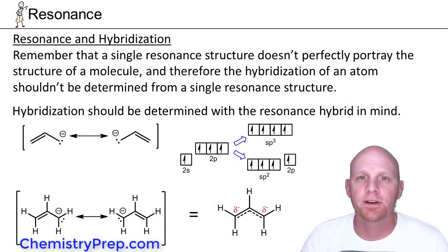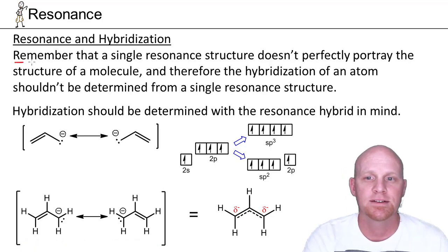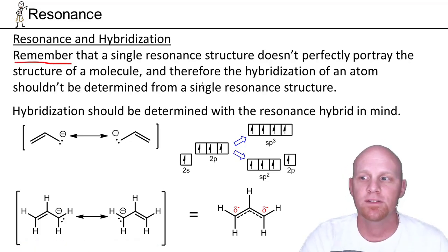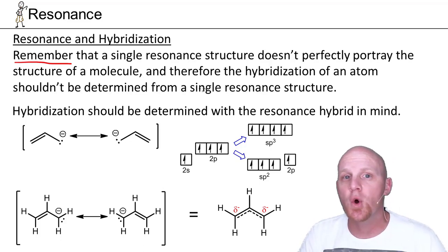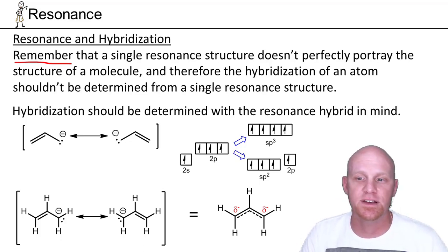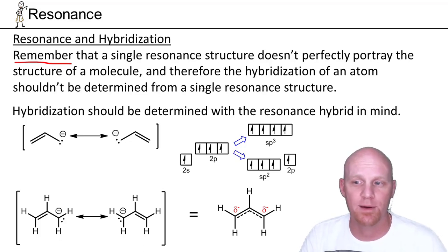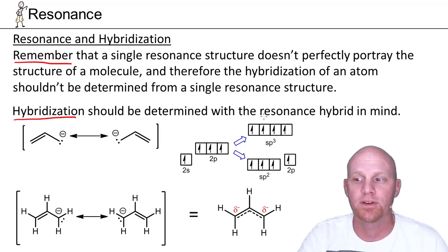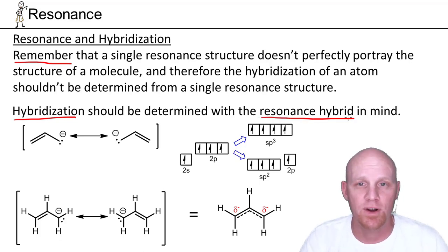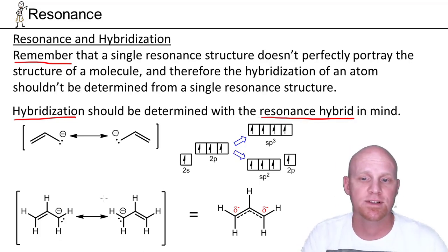Now we've got to take a brief look at the effects of resonance on hybridization. Remember that a single resonance structure doesn't perfectly portray the structure of the molecule — these resonance structures don't really exist. What really exists is some sort of average structure called the resonance hybrid, and your hybridization should really be determined based on the resonance hybrid, because that's your accurate portrayal of what the molecule looks like.